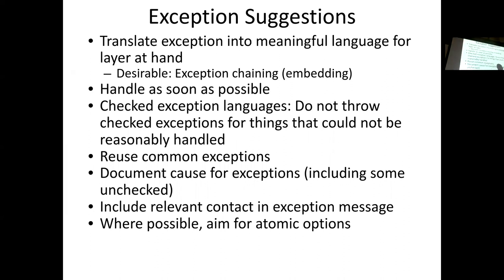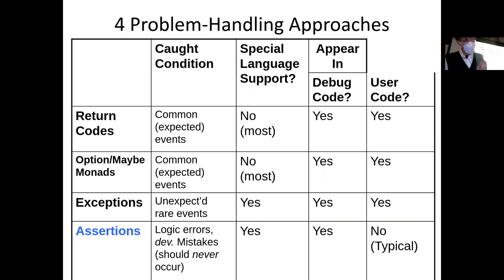Languages that in the past 10 years have invested in features like garbage collection and enforced declaration and handling of exceptions have helped. For exceptions, best practices include: translate exceptions when passing through language layers in a multi-tier system; handle generally as soon as possible; don't throw exceptions for things that can't be reasonably handled; reuse common exceptions rather than creating your own. In Java you can create an exception by subclassing, but be cautious. Try to document the cause for exceptions — include a message saying what happened — and where possible, aim for atomic operations.